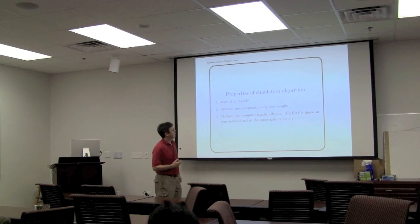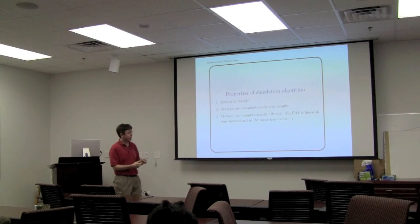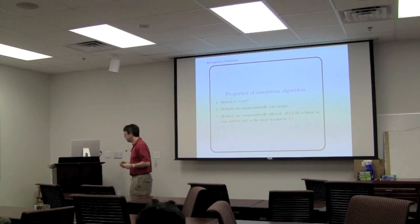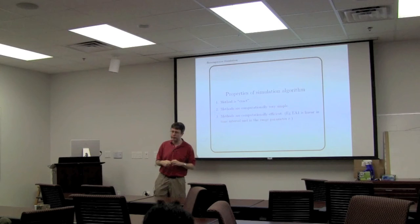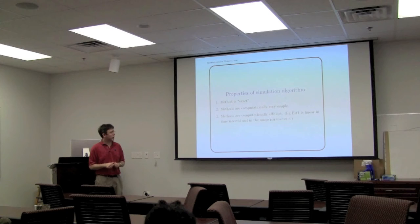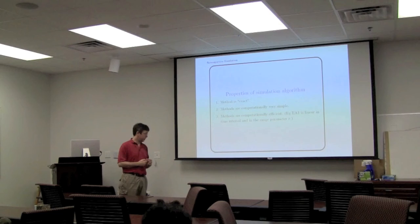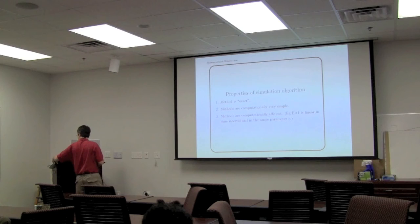So to wrap up: the method is exact, computation is simple and efficient. Having this representation as a skeleton means for Monte Carlo purposes, very often we can get reduced variance estimation just using the analytical properties of the Brownian bridge — we can use Rao-Blackwellized estimators for certain quantities of interest. In some sense, having less of a sample path is often better in terms of efficiency of Monte Carlo methods.